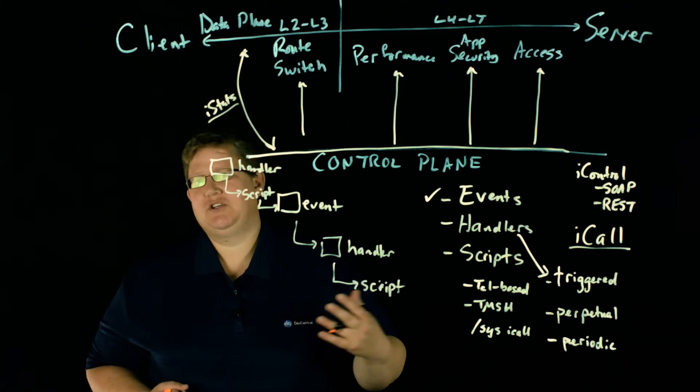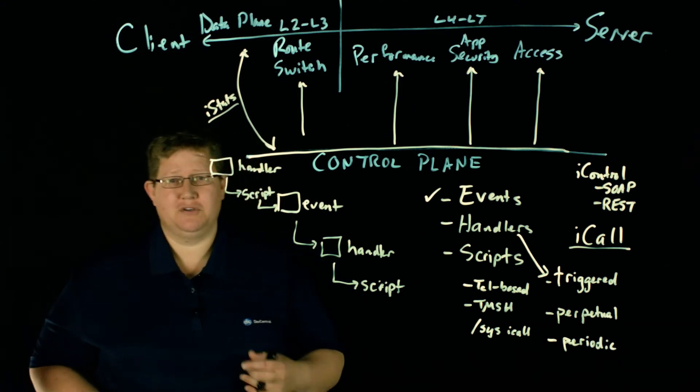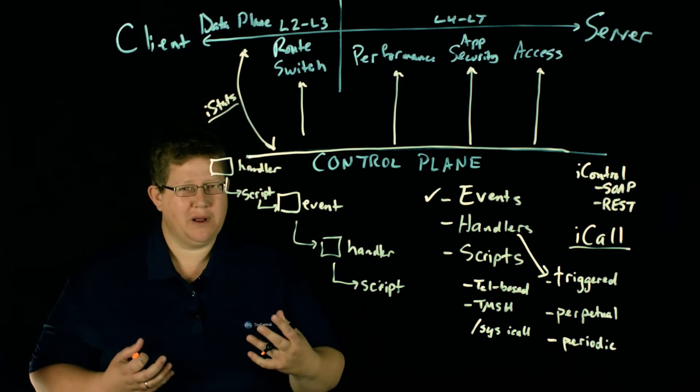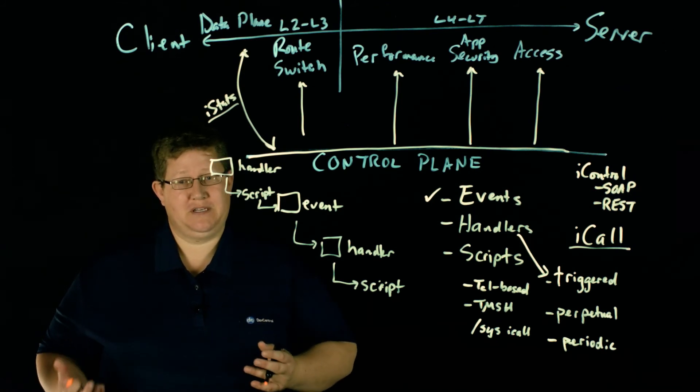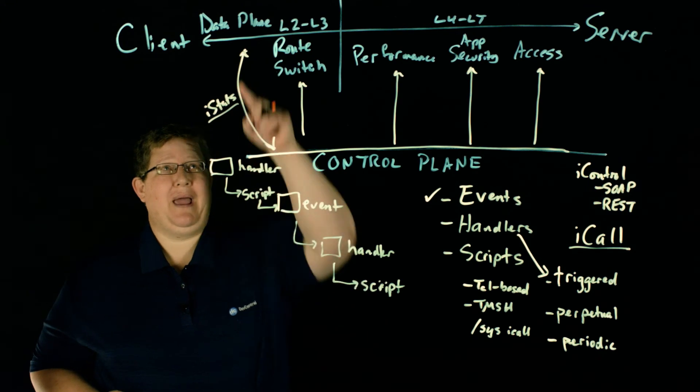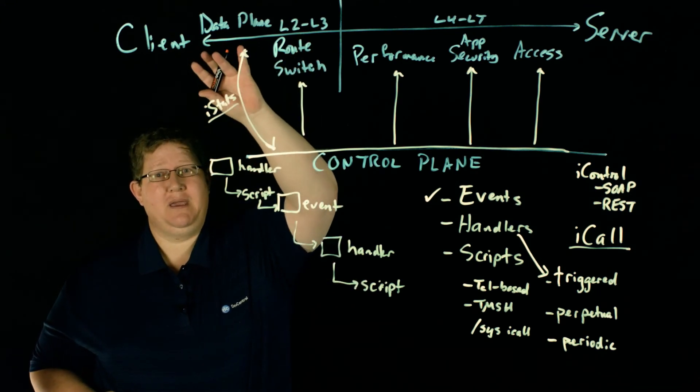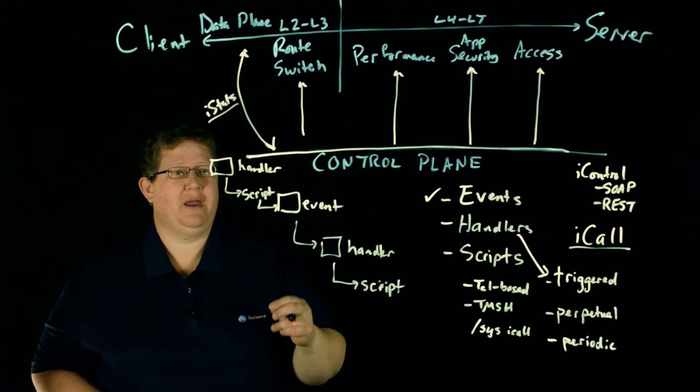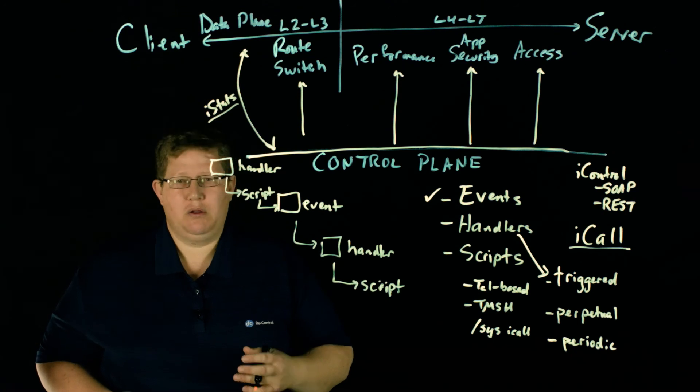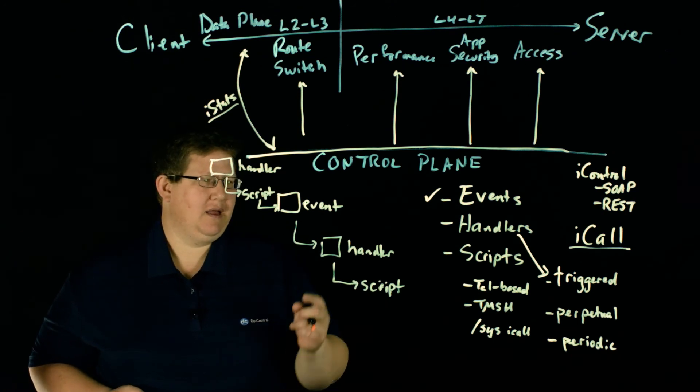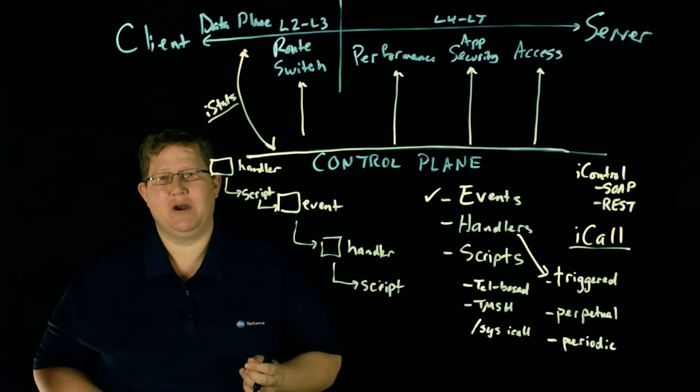Say you have a bunch of 500 errors coming back to you from your servers. You might kick off a TCP dump. For security, if you have HTTP throttling from a particular source IP, you might pass from an iRule via iStat saying, this source IP is bad news. Kick it down here to the control plane, which kicks off an iCall event. And the script will then add that IP to a blacklist in ASM or AFM.